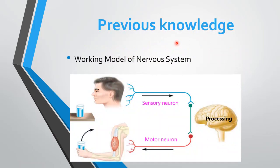Previous knowledge: in the previous lecture you studied about the working model of the nervous system and how it works. We know that the nervous system coordinates all body functions. It detects changes in the environment and produces a response to a particular change. This response to stimuli is detected by receptors, which carry the message as a nerve impulse to the processing unit — the brain. After processing, the brain transfers the nerve impulse to the motor neuron, which carries the message to the effectors or muscles, and the body shows a response to the particular stimuli.